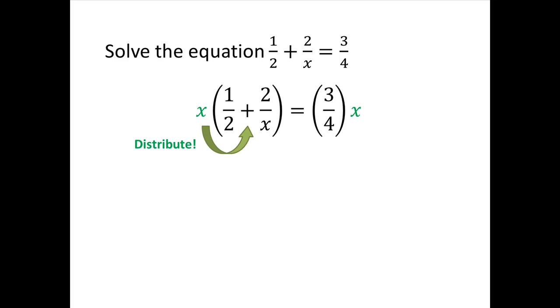When we do this, if we remember to distribute our x across that plus sign inside the parentheses, in other words multiply the x by both the 1 half and the 2 over x, what will happen is we'll end up with x not being in the denominator anymore. When we multiply x by the 1 half, we just get 1 half x.